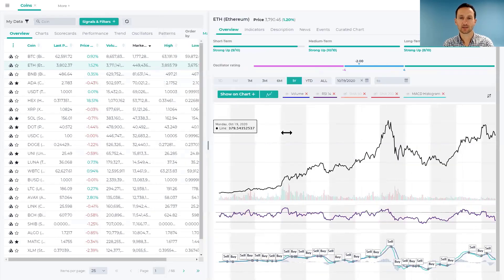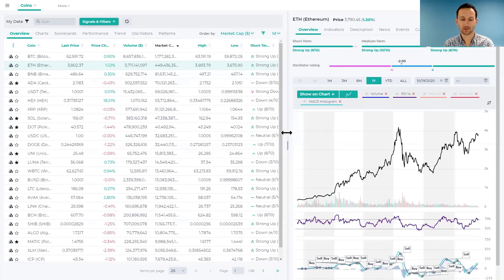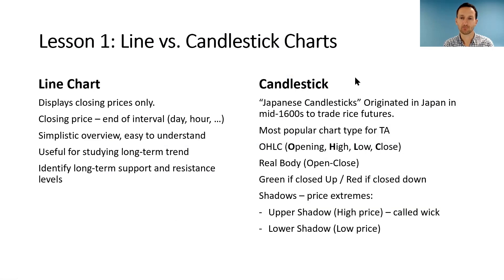But really, it obscures a lot of the action that happens during the day. And that's why everyone's adopted for trading the candlestick chart. They call it the Japanese candlesticks because these charts originated in Japan all the way back in the mid-1600s, which is mind-blowing that they've been used for so long, for hundreds of years, initially to trade rice futures.